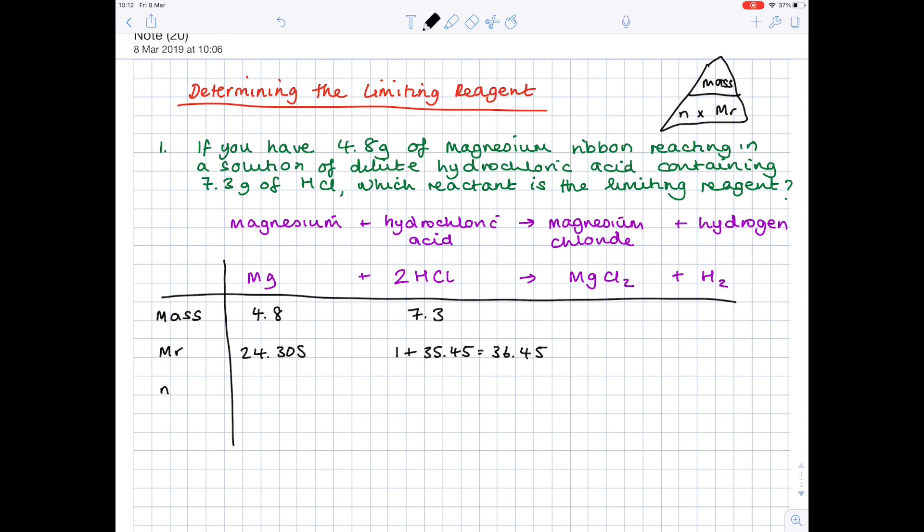Then we want to work out the number of moles. And up here, I've written out the formula triangle, which you should be aware of already. That shows you that number of moles is given by mass divided by MR. So let's do that for magnesium now. You do 4.8 divided by 24.305 to get the number of moles of magnesium, which is 0.19749.